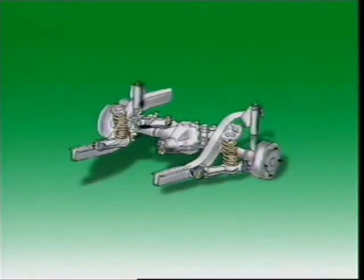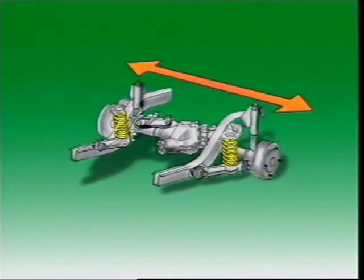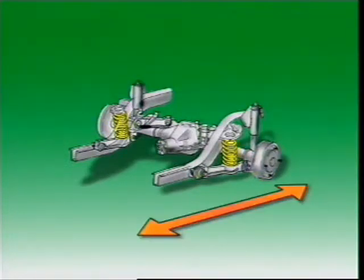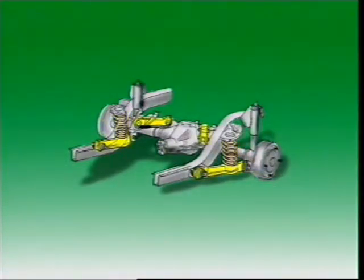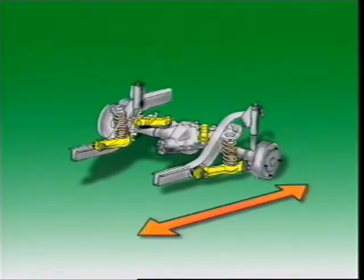Therefore, special provision must be made to locate the axle laterally and longitudinally. Trailing arms, or control rods, are used to position the axle longitudinally. They have flexible rubber mountings at each end where they locate on the axle housing and on the chassis frame.